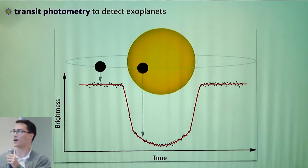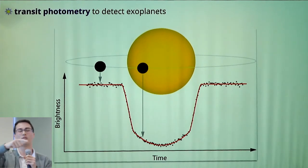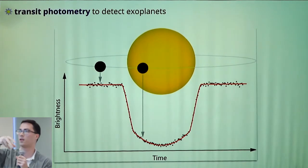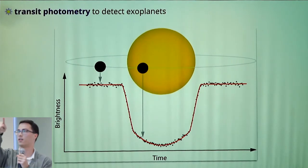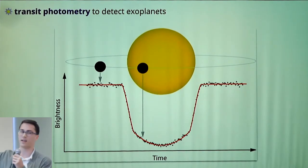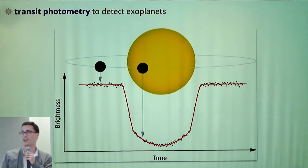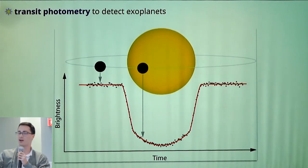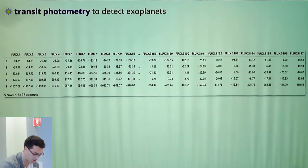One interesting thing that happens during that time is you can observe the light coming from the star. And whenever the orbiting body goes between the observer and the star, there's a dimming in the light. This orbiting happens enough times and you see this periodic motion and you can detect that there's an orbiting body there.